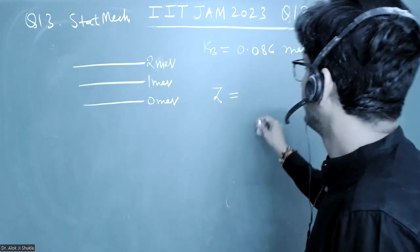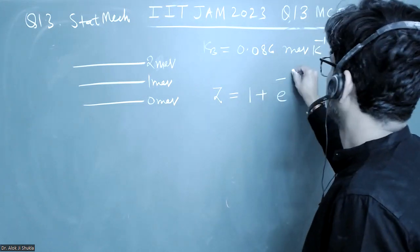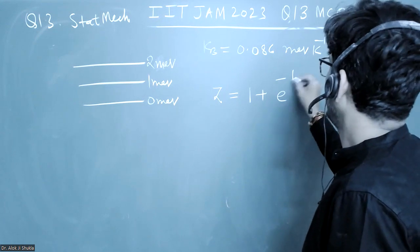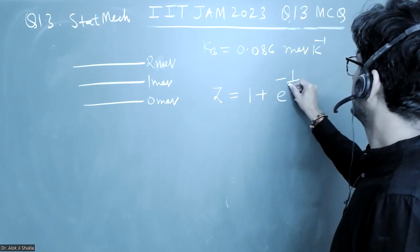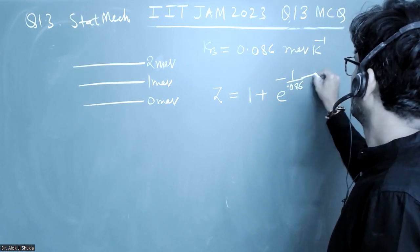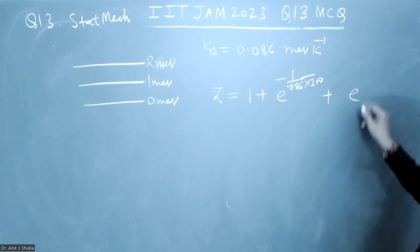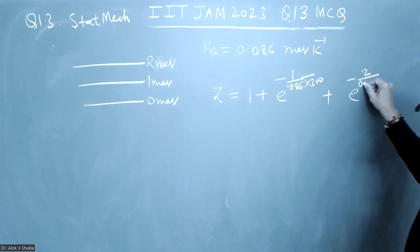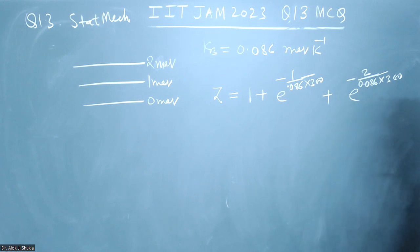What I can do is I can write the partition function z equals 1 plus e to the power minus 1 by KB T, so 1 by KB is 0.086 into T is 300, plus e to the power minus 2 by 0.086 into 300.